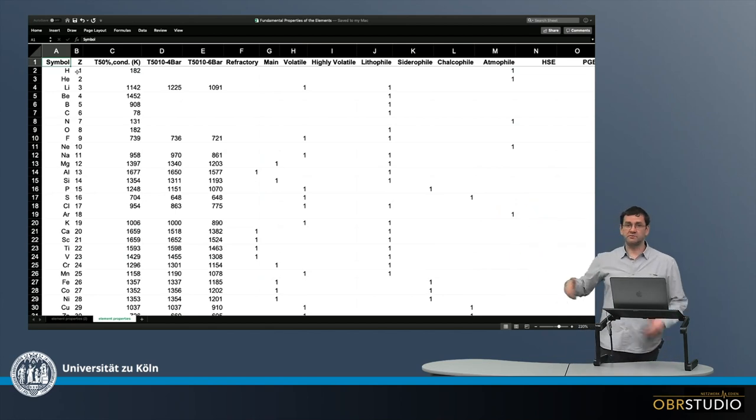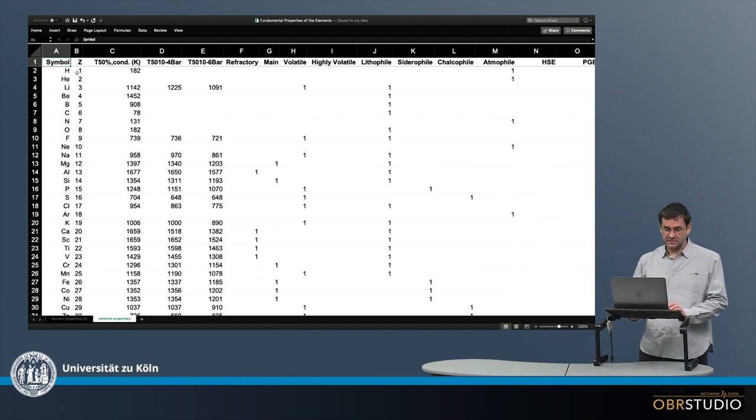So in the first column there are just the elements. Then in the following columns and categories, and I'm certainly not going through this in detail,